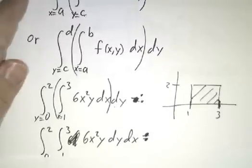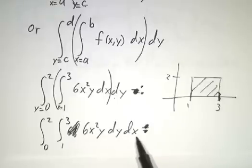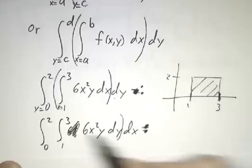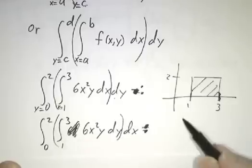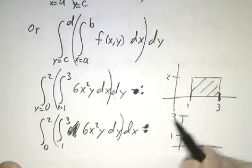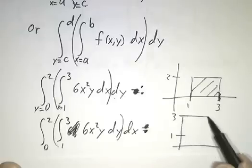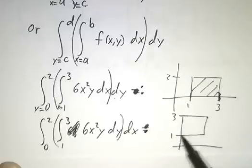If instead we had written the integral from 0 to 2 of the integral from 0 to 1 of 6x²y dy dx, then the first integral would be over y, so y would go from 1 to 3, and the second integral would be over x, so x would go from 0 to 2, and you would have a very different region.